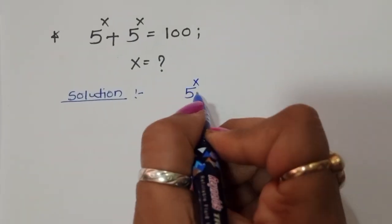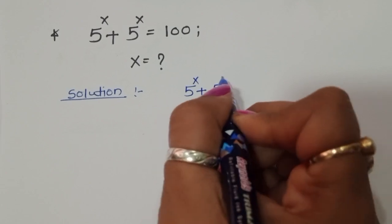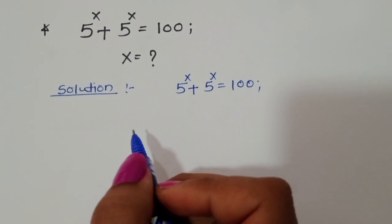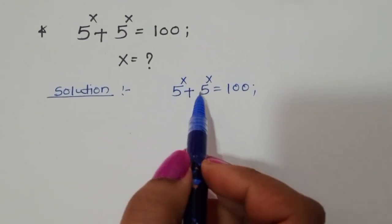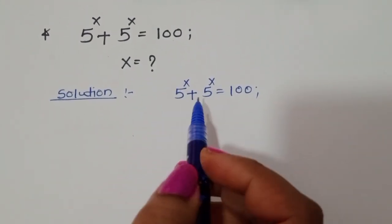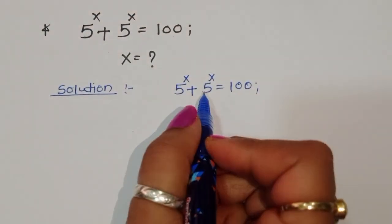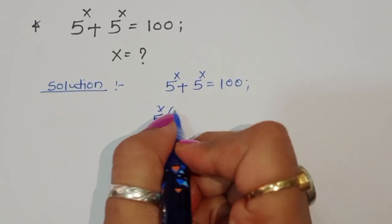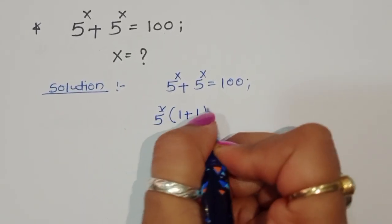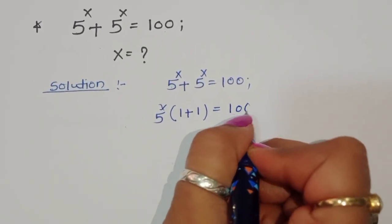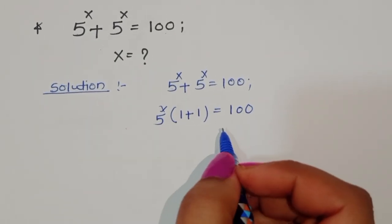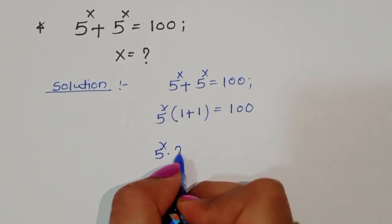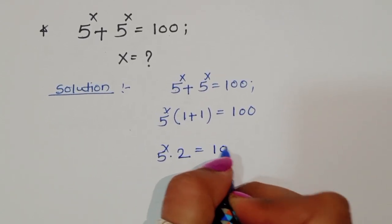5^x plus 5^x is equal to 100. You can see here there are two terms of 5^x, so we can take 5^x common. Taking 5^x common, the left term becomes 1 plus 1, so 5^x times 2 is equal to 100.